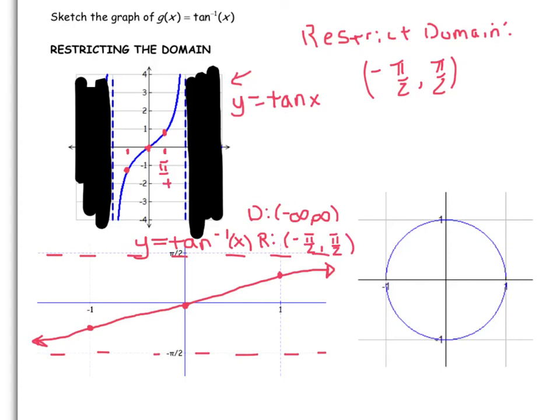So we can say a few things about this. For instance, tan inverse of 1. When I input 1 as a ratio, what is the angle that gave me that? Well, clearly, we can see that it's π/4. Just as an example.